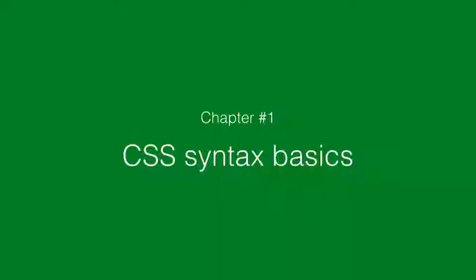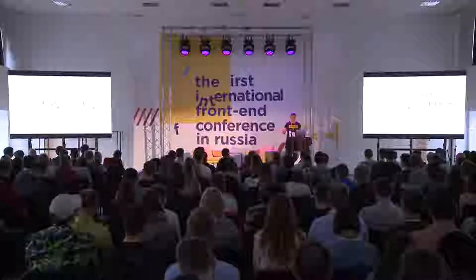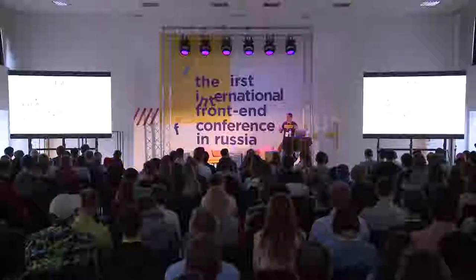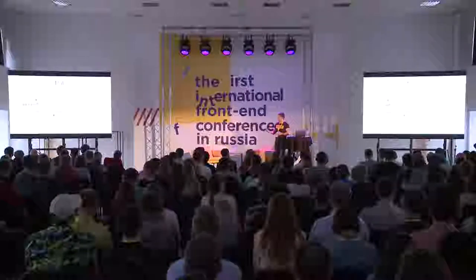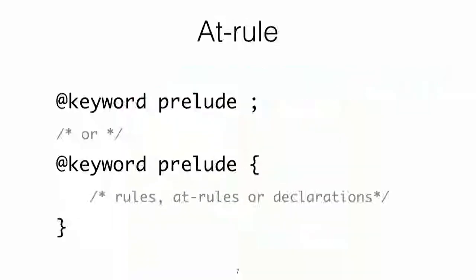The first chapter is about CSS syntax basics. You should know that a CSS document is a series of rules and at-rules. The first one actually applies some styles to our elements, and the second one is some kind of instruction for CSS, providing some values for the CSS document. If you take a closer look at a rule, the syntax is quite common and very simple. The same thing is true for at-rule syntax. That's all the basics.